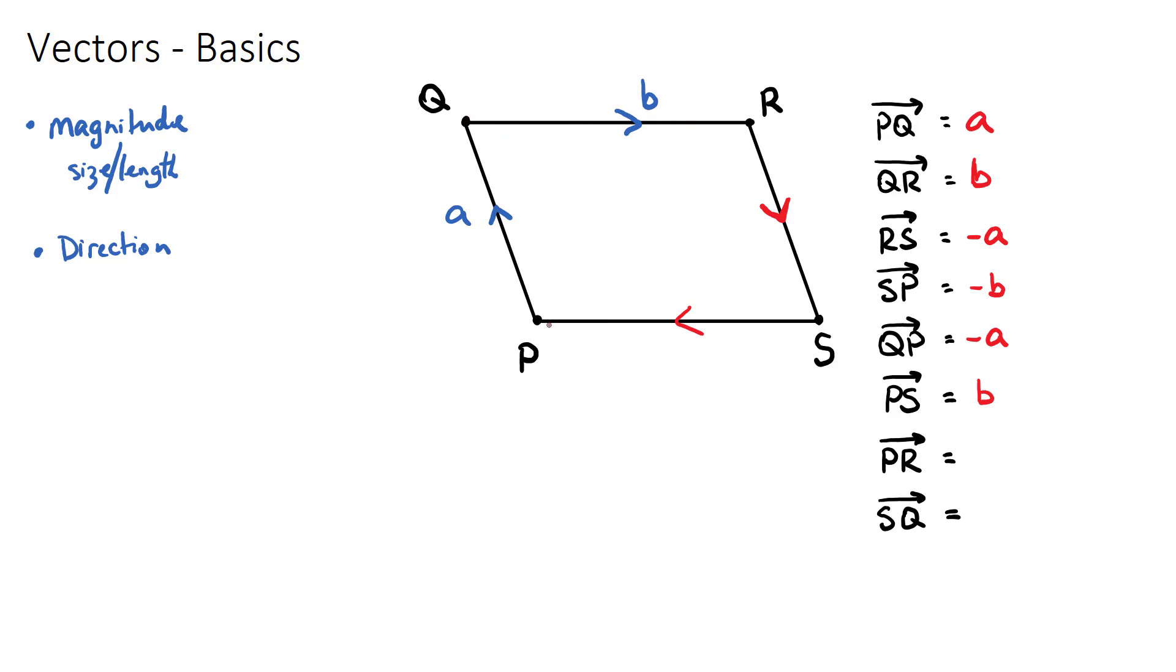To go from p to r, we're going to go from p up to q, which is the vector a, and then we're going to add the vector b, which is q to r. So a plus b, the addition of these two vectors will get us from p all the way to r.